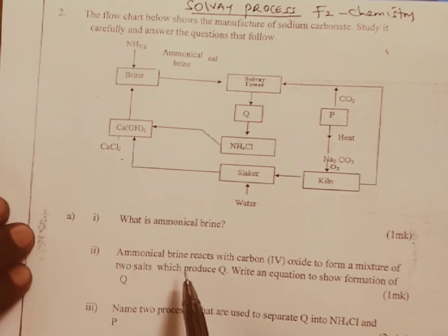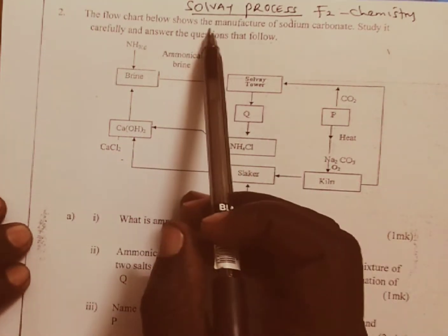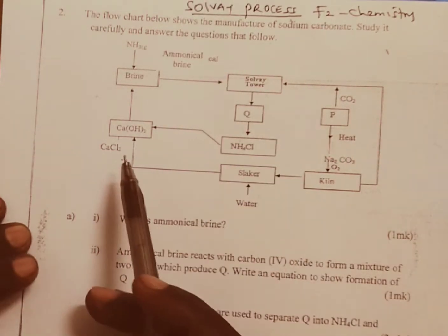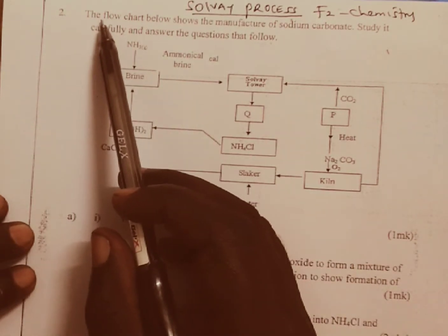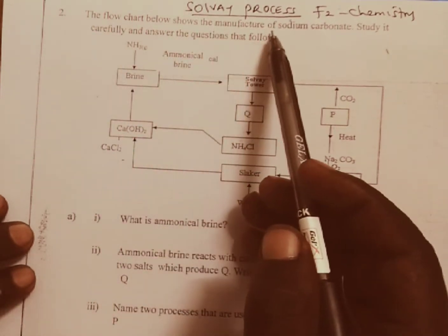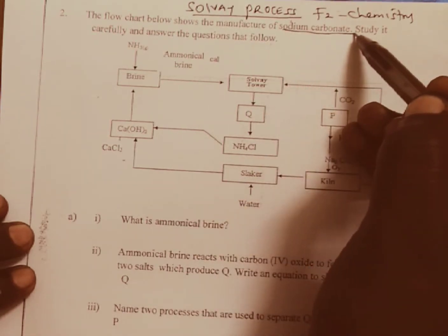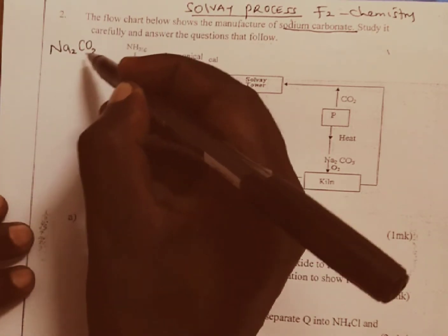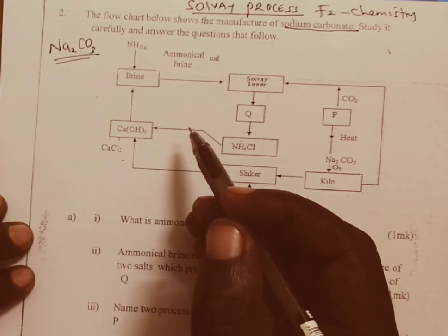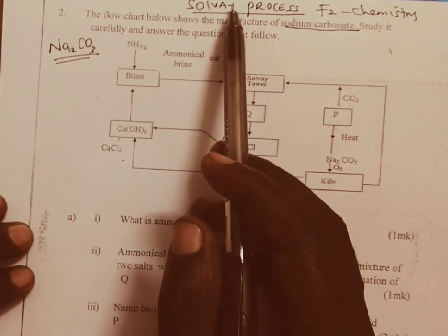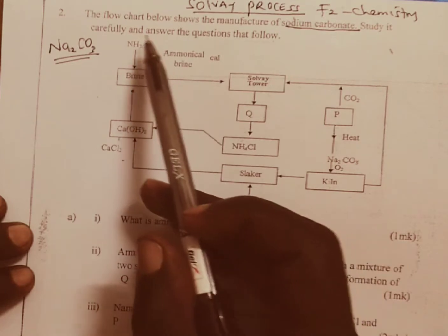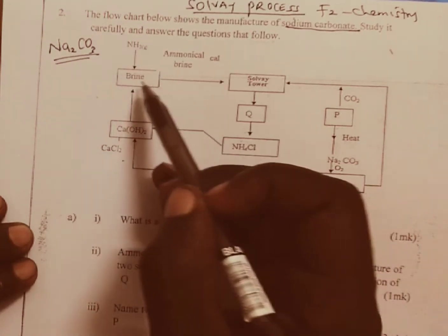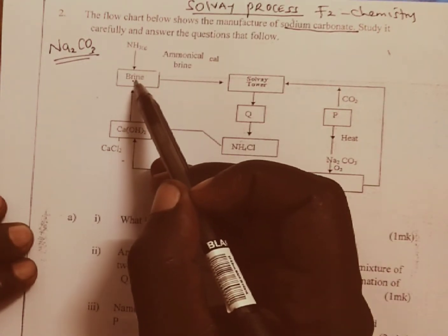Welcome to today's discussion. Today we are going through Form 2 chemistry — the Solvay process flowchart. The question reads: the flowchart below shows the manufacture of sodium carbonate. Sodium carbonate (Na2CO3) is manufactured through the Solvay process. Study it carefully and answer the questions that follow. We have ammonia coming into the chamber containing brine.